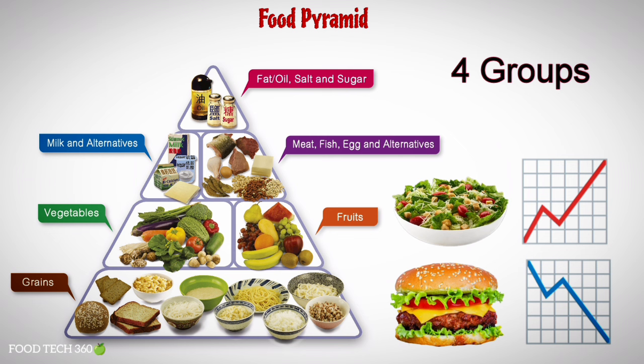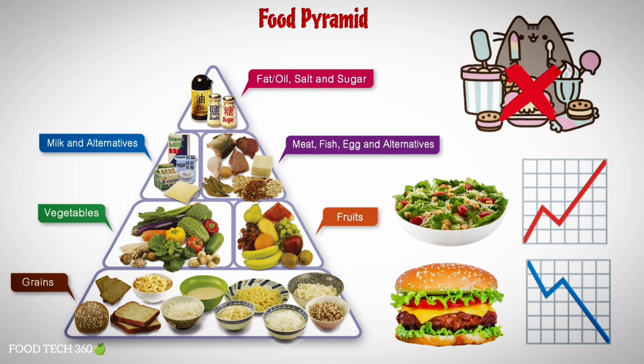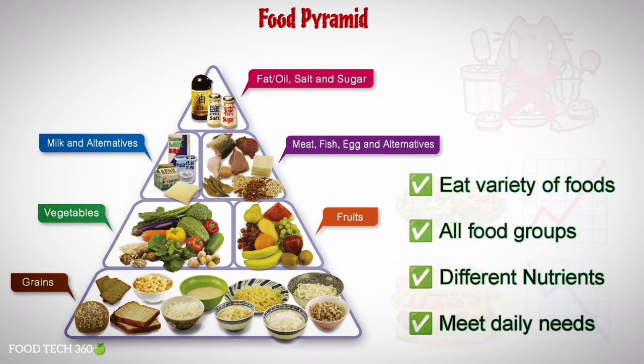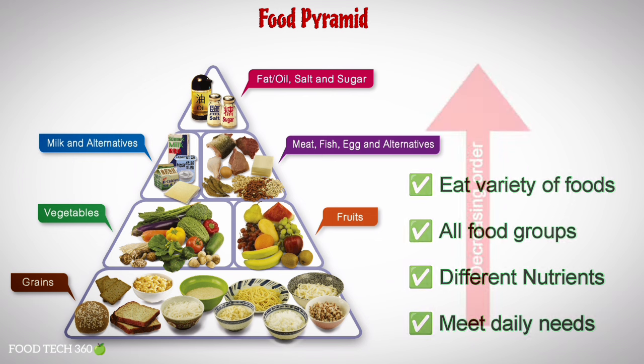Since different foods have different nutritional values, it is not possible to obtain all the nutrients we need from a single food. According to this food pyramid, we have to eat a variety of foods among all the food groups as well as within each group in order to get different nutrients and meet our daily needs.